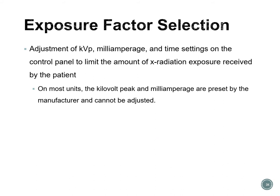For exposure factor selection, we want to use a high enough kVp and milliamperage to get the radiograph we need, but a low enough level that we're not unnecessarily exposing our patients to x-radiation. Adjusting the kVp, milliamperage, and time settings on the control panel limits radiation exposure. The standard kVp is between 60 to 70, milliamperage is between 6 and 8, and the time setting always changes depending on the type of radiograph being taken.